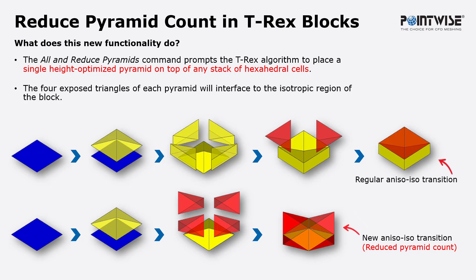When this option is selected, the TREX solver will take the last hexahedral cell in the TREX front and decompose that cell into five pyramids and two tetrahedral cells. So, as you can see, every hexahedral cell in the front will present five pyramid cells to the isotropic tetrahedral mesher.